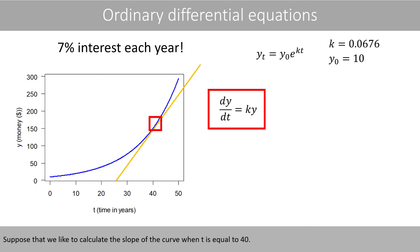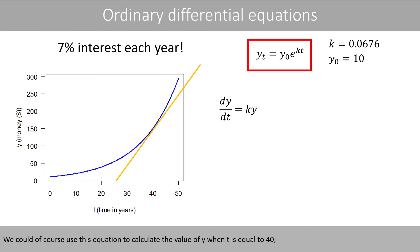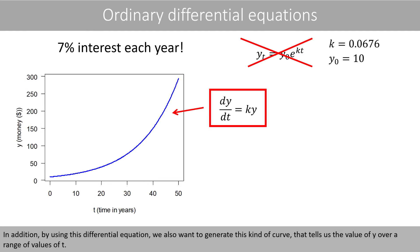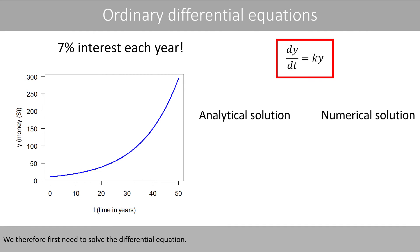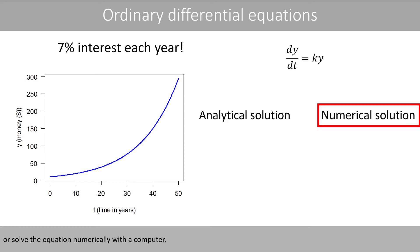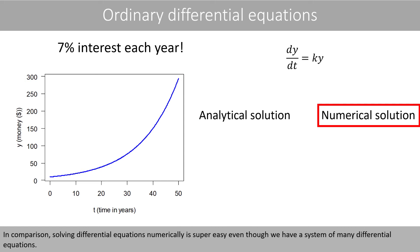Suppose we like to calculate the slope of the curve when t equals 40. The problem is that we do not know the value of y when t equals 40. We could use the exponential equation to calculate it, but in most cases we do not have this type of equation when working with differential equations. In addition, we also want to generate a curve that tells us the value of y over a range of values of t. We therefore first need to solve the differential equation — either by finding the analytic solution or by solving it numerically with a computer. Finding the analytic solution can be quite hard, and sometimes even impossible, for more complicated differential equations. In comparison, solving differential equations numerically is super easy, even when we have a system of many differential equations.